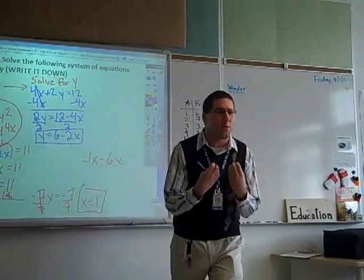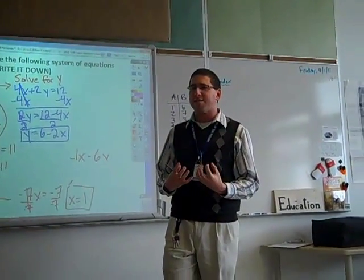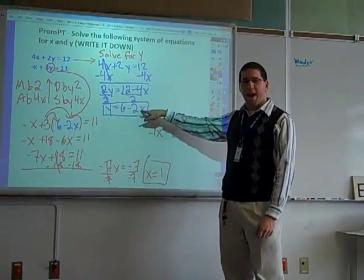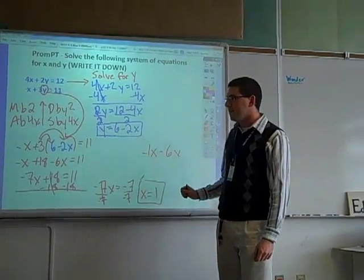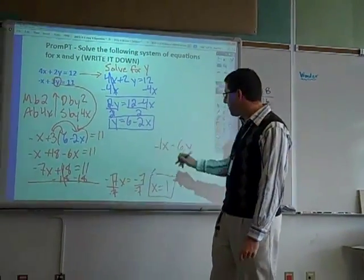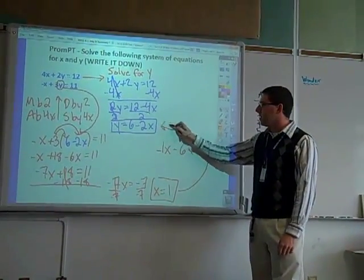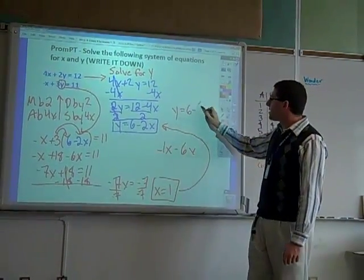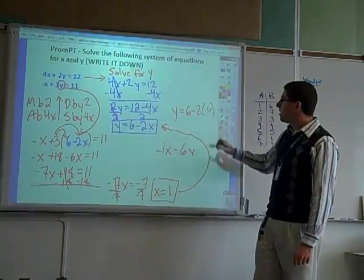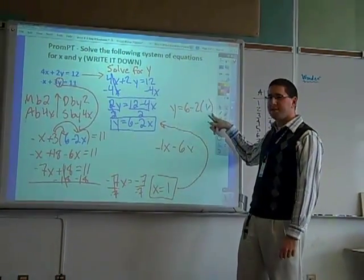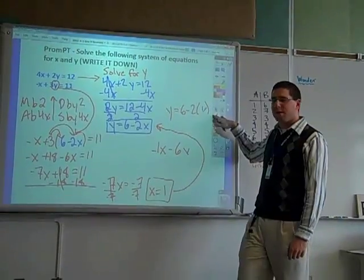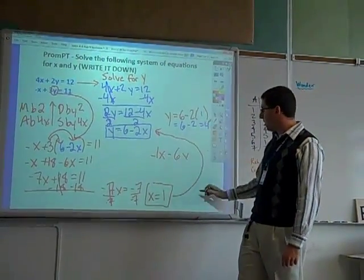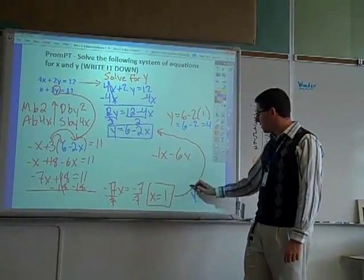Where do I find the y? You plug x in to the first equation. I take the x, I plug it back in where I came from. I'm going to take my x equals 1, plug it back in, and put in the x part. Y equals 6 minus 2 times 1. I get 6 minus 2, which is 4. So my y equals 4.